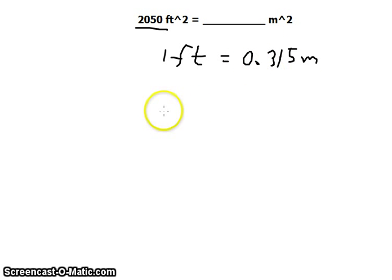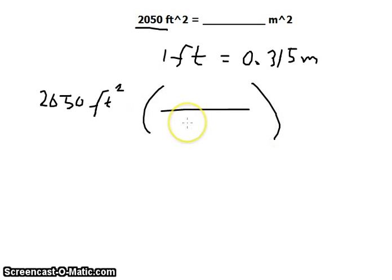That's linear, but we will do something about that later in our solution. So we can write here 2,050, and that is square feet, and we multiply that by the conversion factor we have there, relating feet to meters. And so, feet would be in the denominator, and meters in the numerator, 0.315 meters.